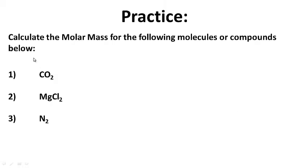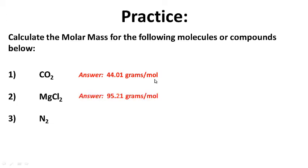Practice: calculate the molar mass for the following molecules or compounds. Go ahead and pause this while you work, then hit play when you're ready to see the answers. For carbon dioxide, the molar mass is 44.01 grams per mole. The molar mass of magnesium chloride is 95.21 grams per mole. And the molar mass of N2 nitrogen gas is 28.02 grams per mole. Hopefully you got those right.